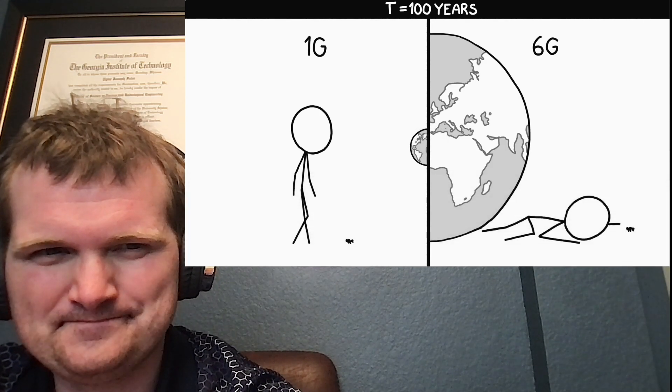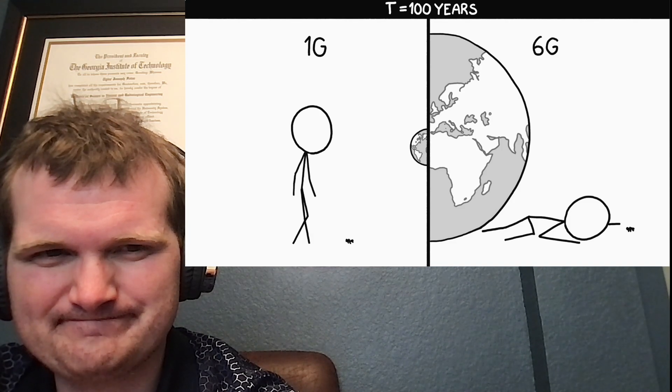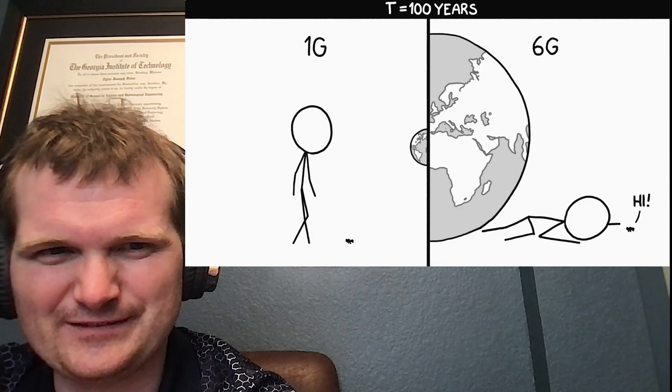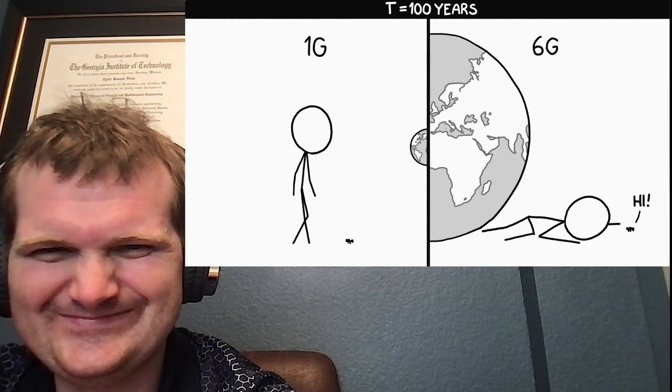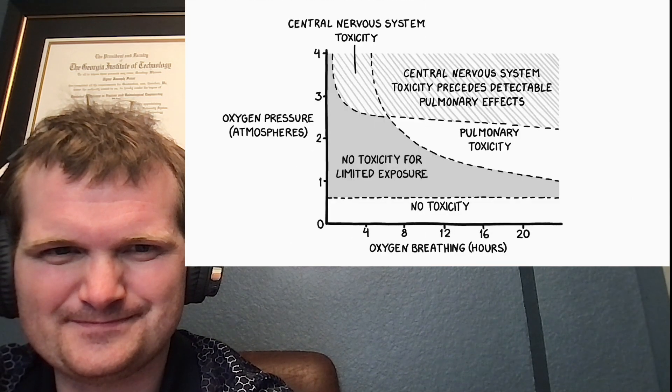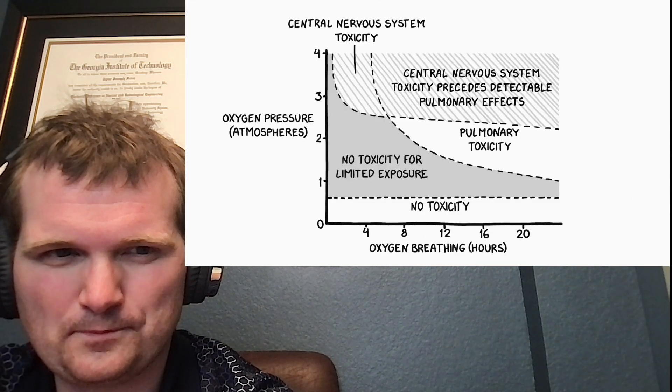Not only would we be unable to move around to find food, but our hearts would be unable to pump blood to our brains. Only small insects and sea animals would be physically able to move around. On top of that, at somewhere around this point, even ordinary air becomes toxic due to higher oxygen levels.